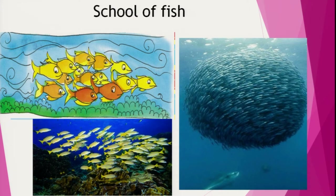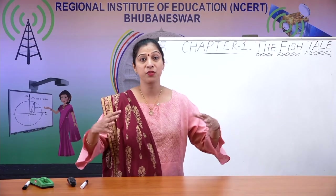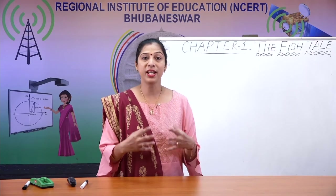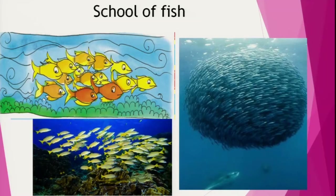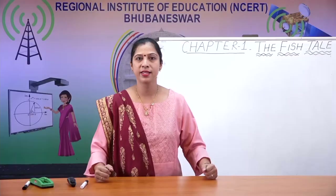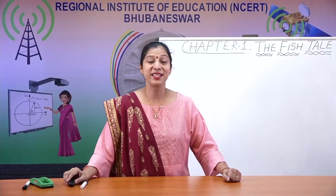Why are they called a school of fish? Because they come together to make one group. They are so small that if they move individually, they will be eaten by larger fish. So when they come together and make a bigger shape, the larger fish are scared of them. Sometimes they puff up water or air to make themselves look bigger.